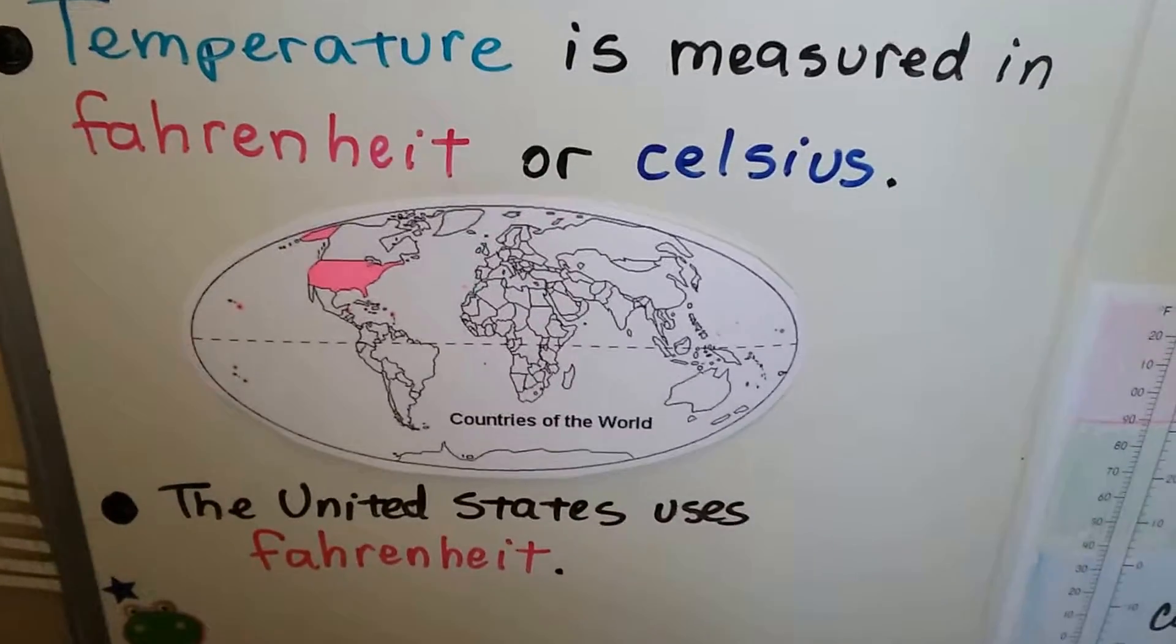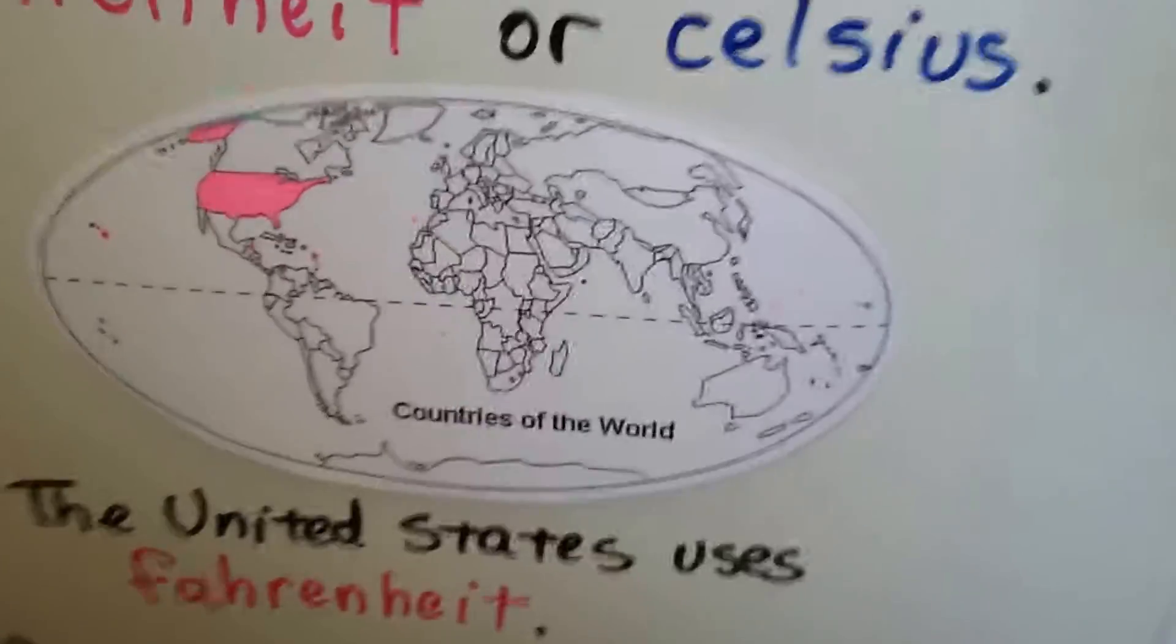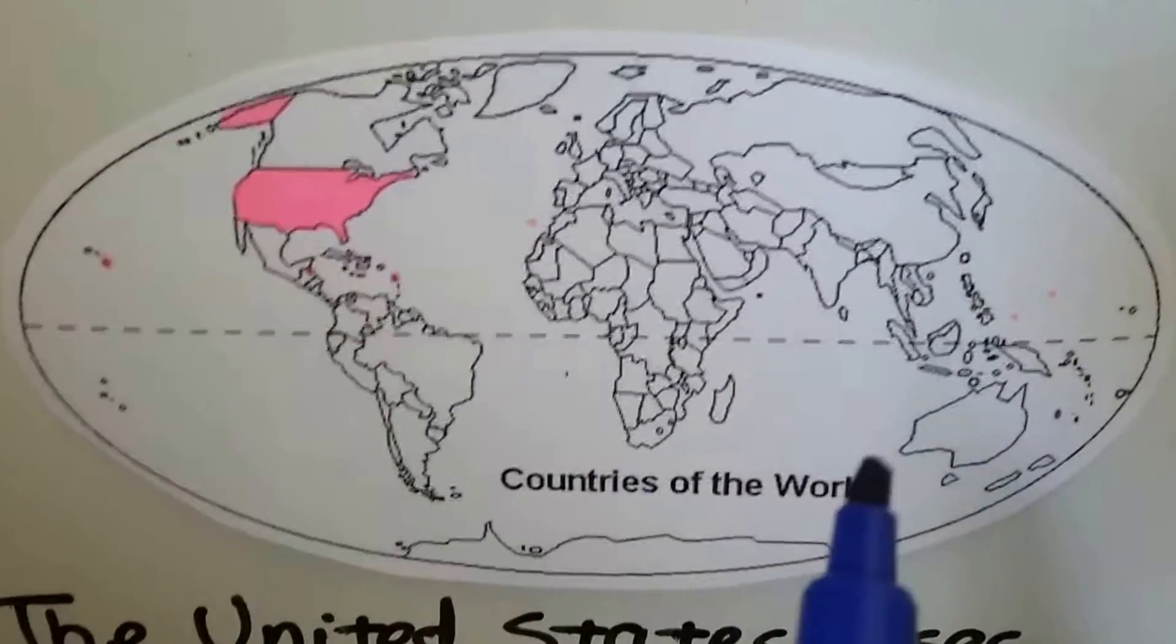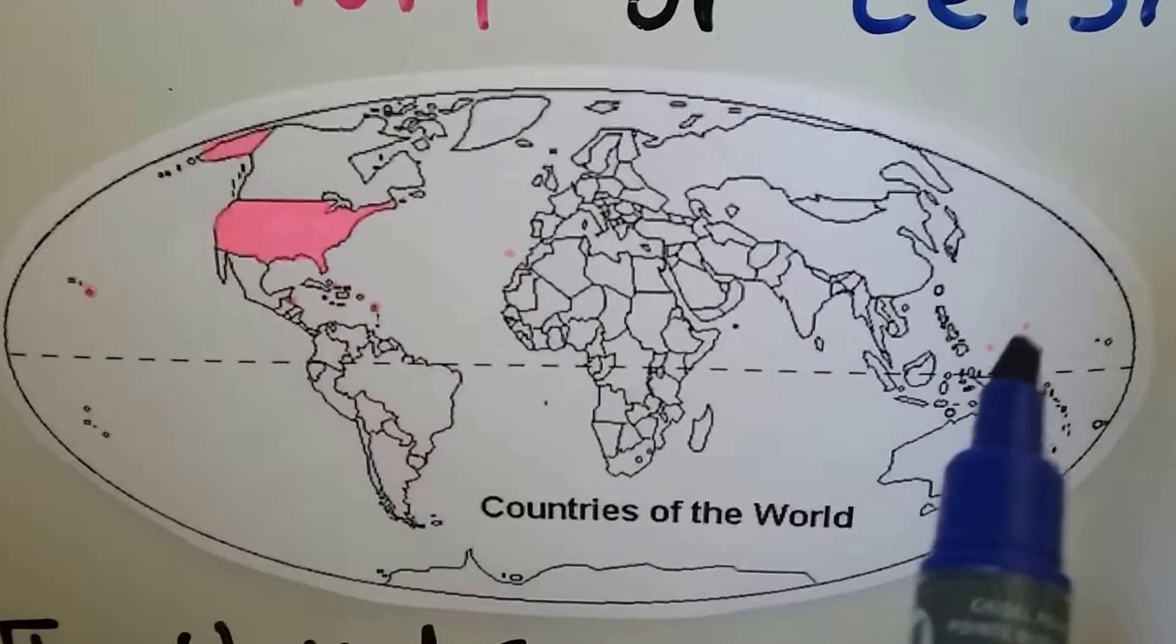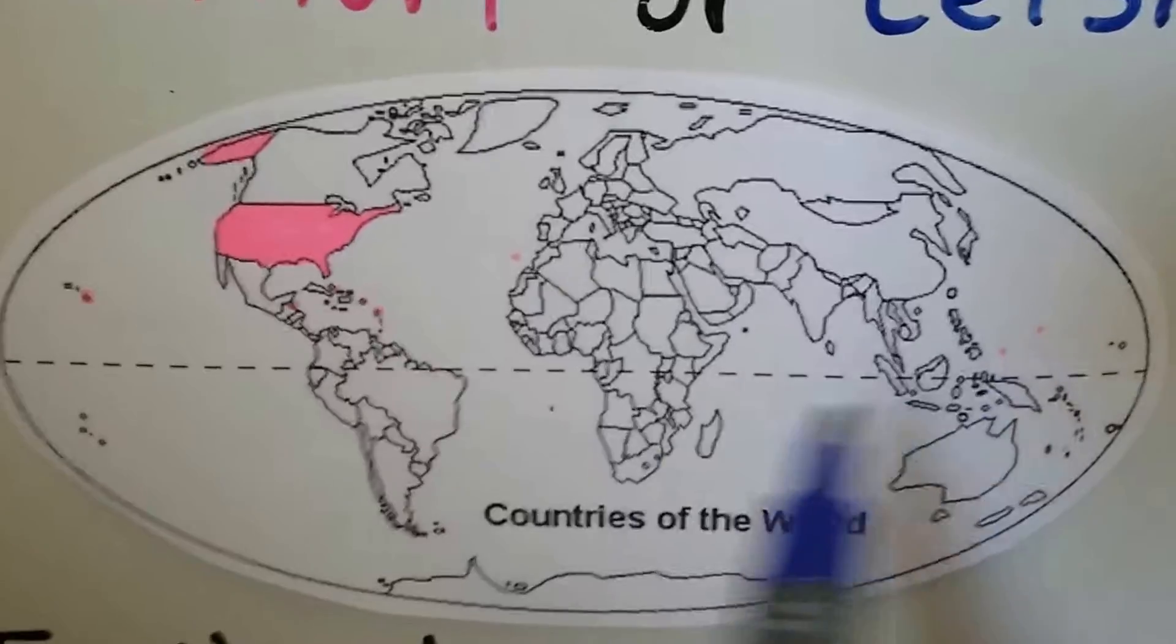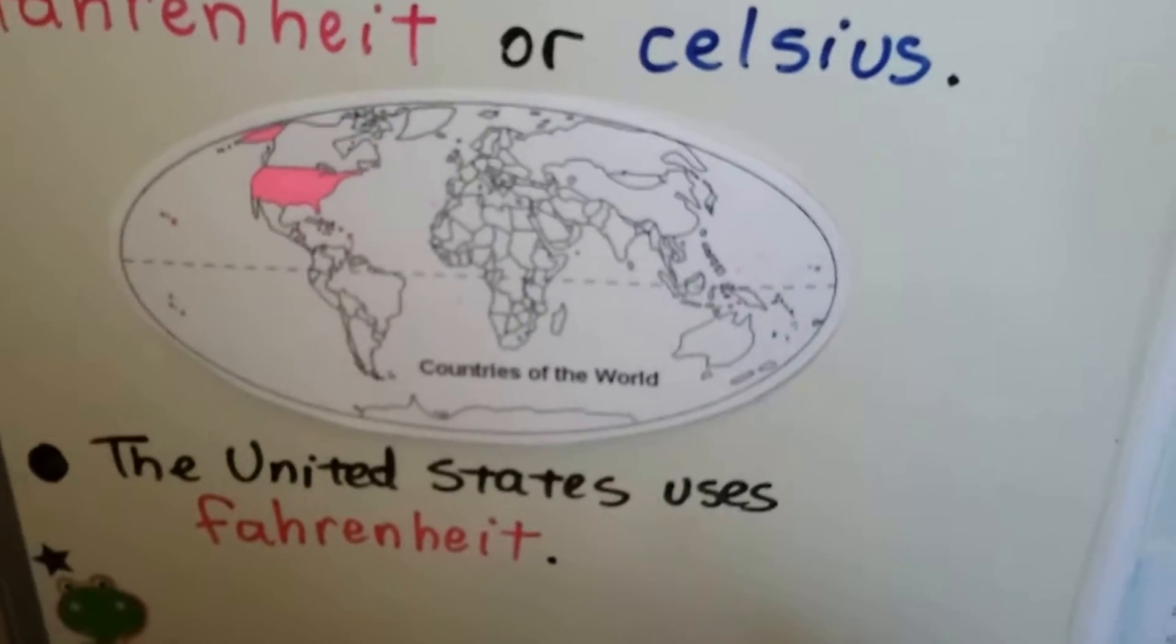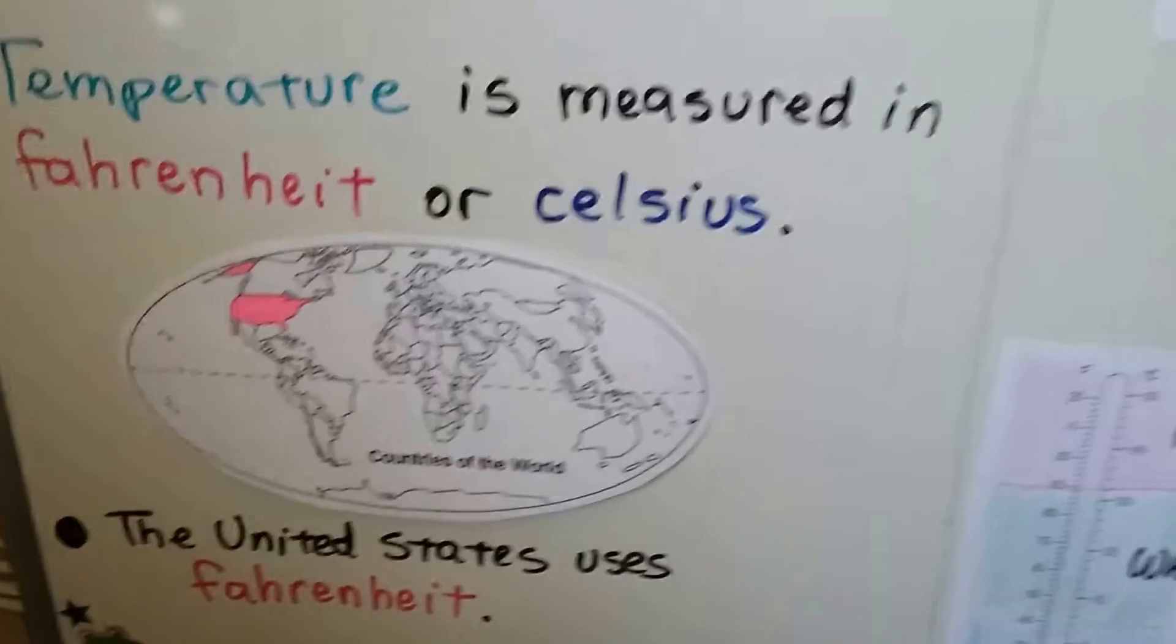See that? The United States uses Fahrenheit. And there's a few little islands. If you look at my pink dots, here's Hawaii, that's Alaska, we've got the Canary Islands, and we've got Burma over here. See? Tiny little pink dots. Those are little islands. They use Fahrenheit also. But the rest of the world uses Celsius. So the United States uses Fahrenheit and the rest of the world pretty much uses Celsius.